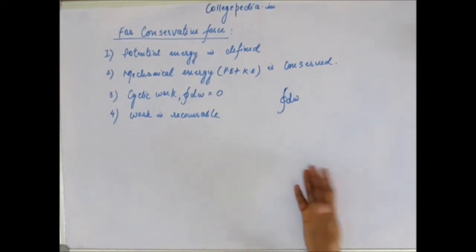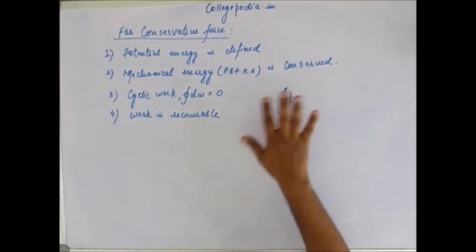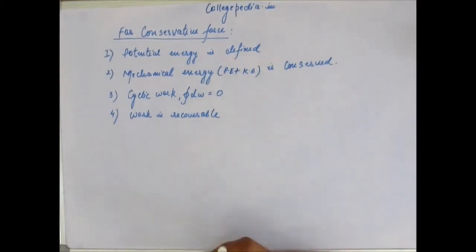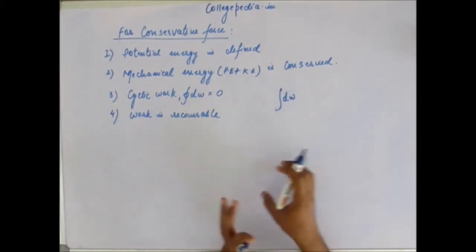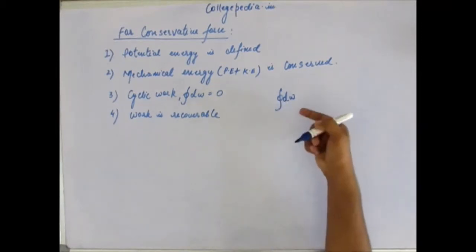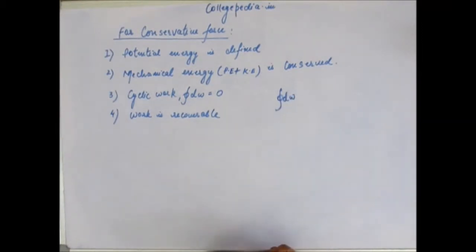Cyclic work done is zero in case of conservative force. Work done - the symbol of work done - is the integration of small work done. It is the summation of small work done, and in a cyclic process we represent it like this: put a circle on the integration sign. The cyclic work done in case of conservative force is zero.